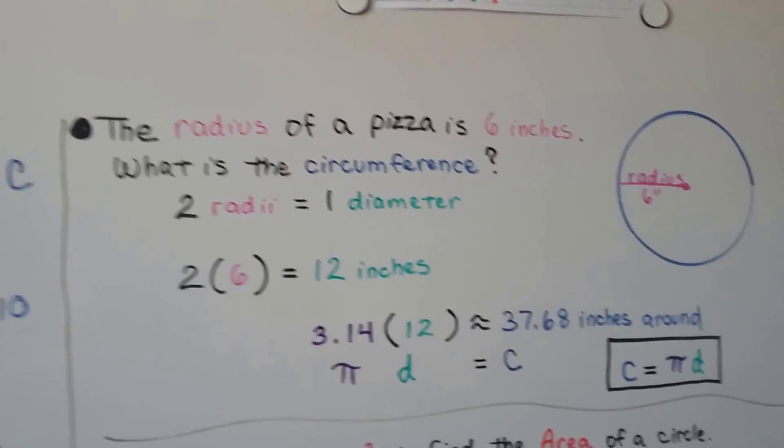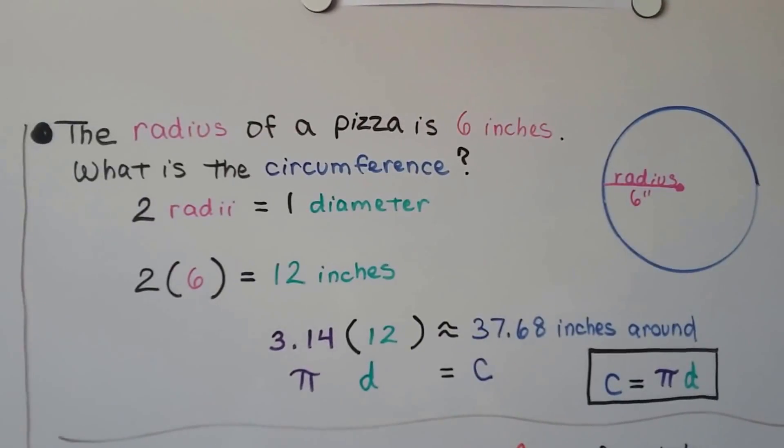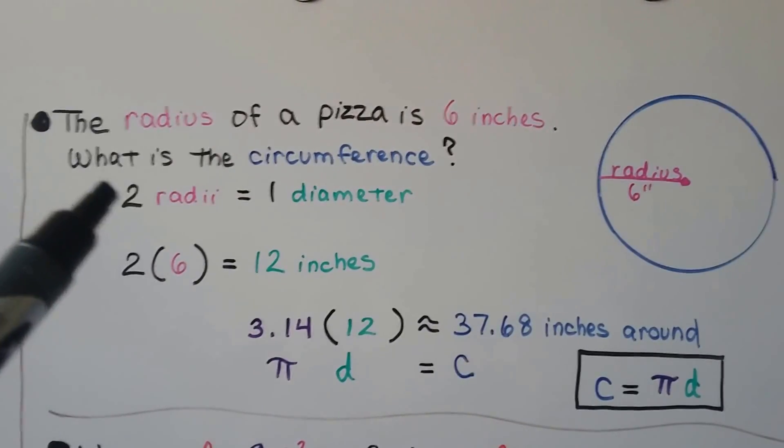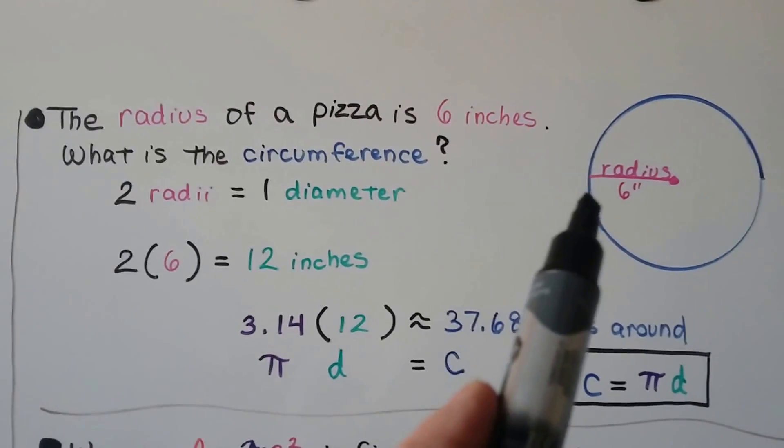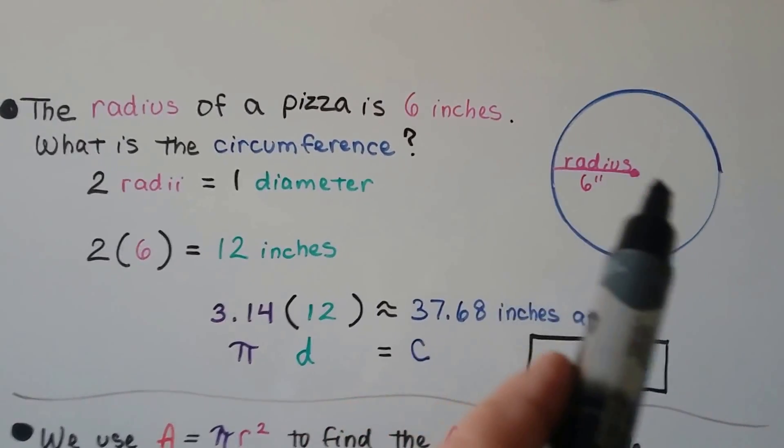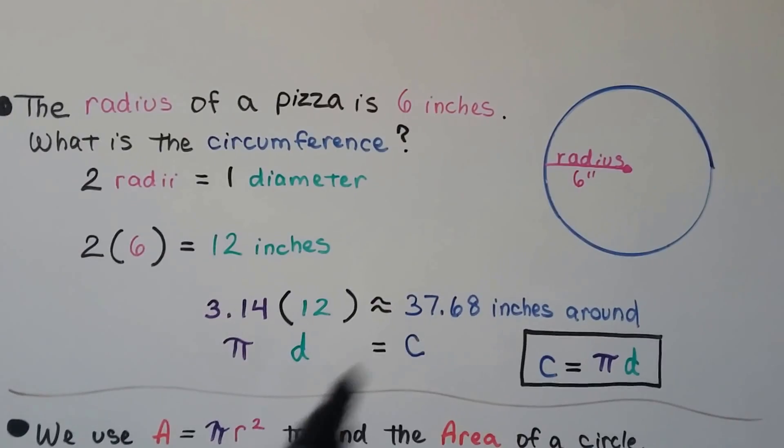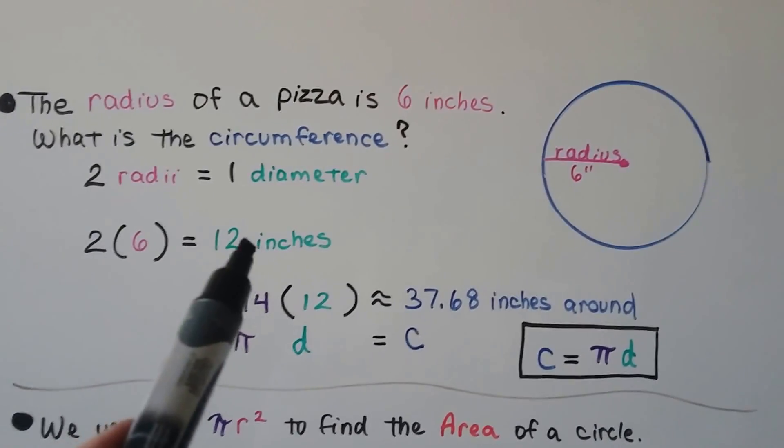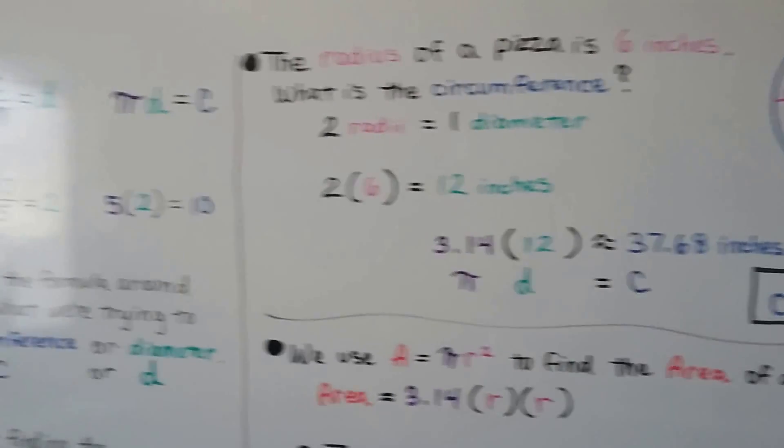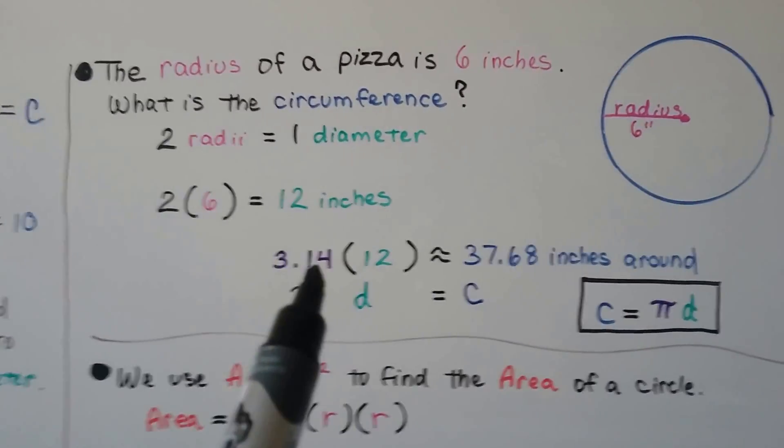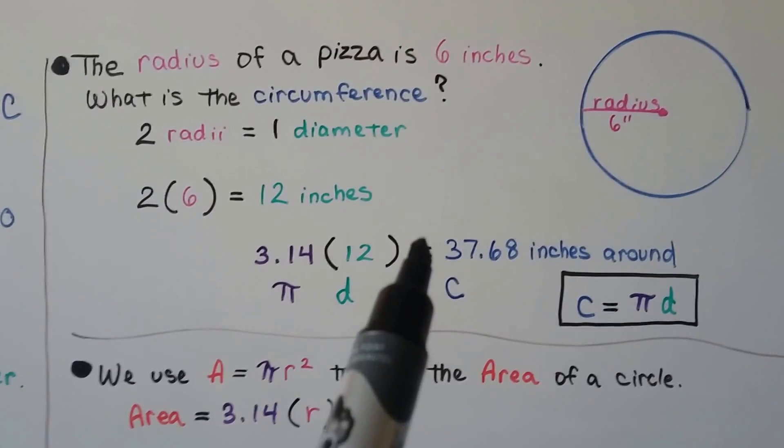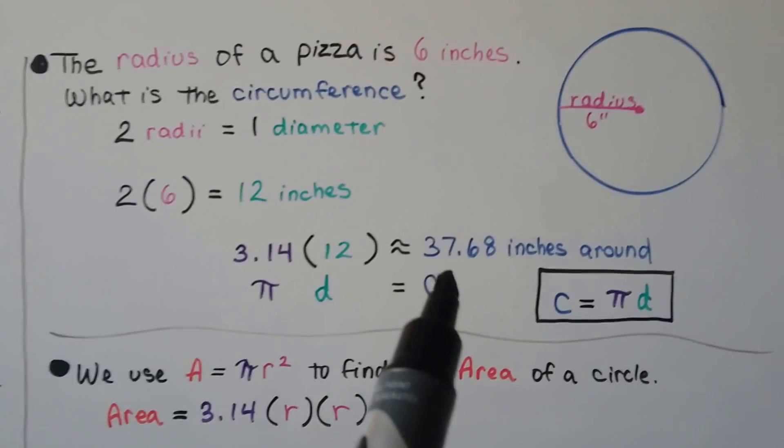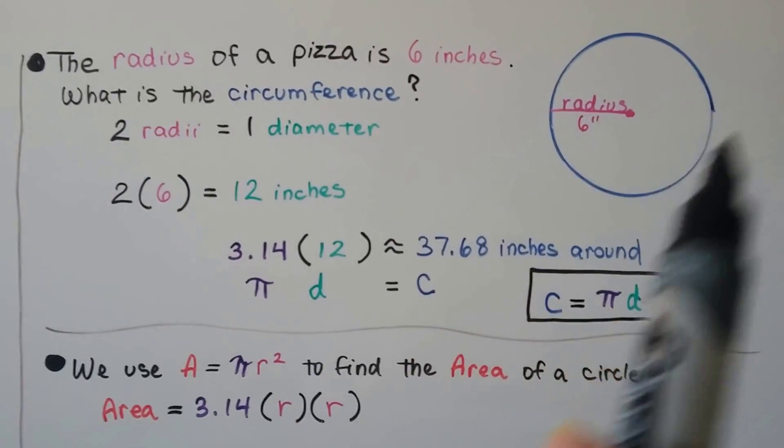The radius of a pizza is 6 inches. What's its circumference? Now remember it takes two radii, that's the plural for radius, it takes two radii to make a diameter. Because the radius only goes halfway, the diameter goes all the way across. All we have to do is multiply that 6 by 2 and get 12, then we'll have the diameter. Now we can use our formula. 3.14 times 12 is going to be approximately, because we're not using all the digits of pi, it's approximately 37.68 inches around.